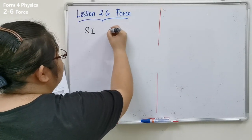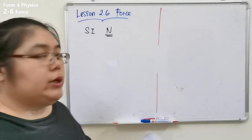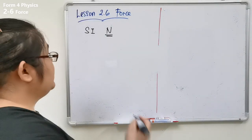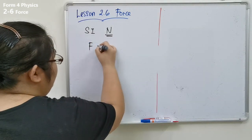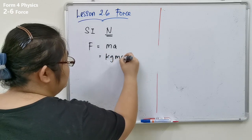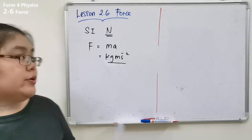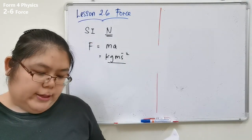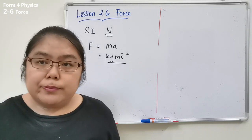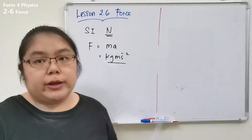The SI unit for force is the newton (N). We also have the base unit: from Chapter 1, we learned the force formula is F = ma. The unit is kg·m·s⁻², which we call the base unit for force. You can also write it as newton, capital N. To measure force, we don't use a measurement scale — that only measures mass. We use a spring balance.